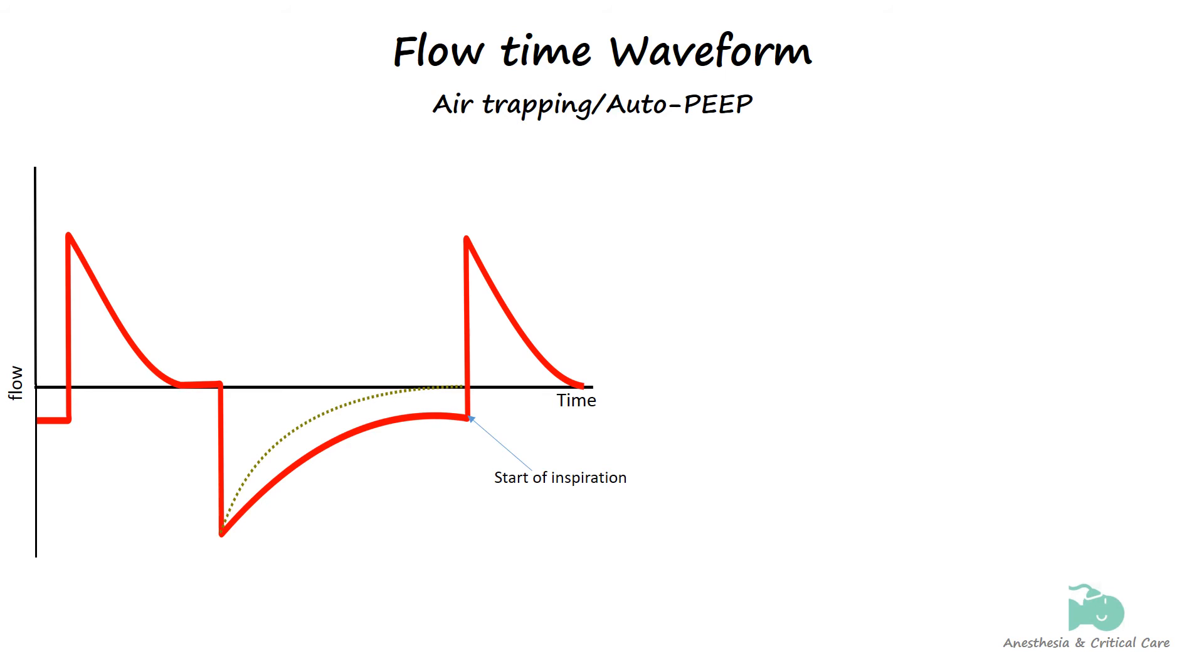Auto-PEEP or air trapping occurs when the lungs do not fully empty before the next breath begins leading to a build-up of pressure. In the flow-time waveform, this is identified during the expiratory phase. Normally, the expiratory flow gradually decreases and returns to the baseline before the next inspiration starts. If auto-PEEP is present, the expiratory flow does not reach zero before the next breath begins.